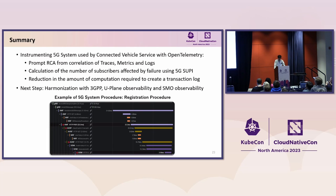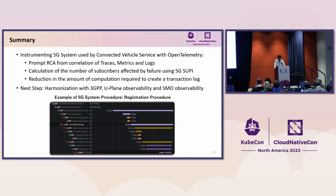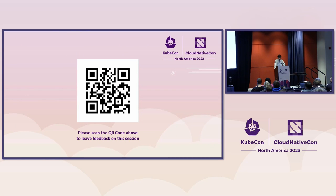In closing, let me go over the key points. We instrumented the 5G system used by connected vehicle service with OpenTelemetry, and this leads to important results: first, prompt root cause analysis from correlation of traces, metrics, and logs; second, calculation of the number of subscribers affected by failure using 5G SUPI; and lastly, reduction in the amount of computation required to create a transaction log. The next step will be to harmonize with organizations such as 3GPP using CNCF projects and create applications incorporating OpenTelemetry in software for lifecycle management, such as Onap, which is open source. Thank you for joining my talk.